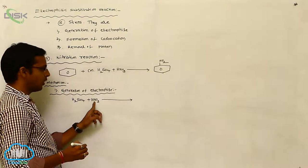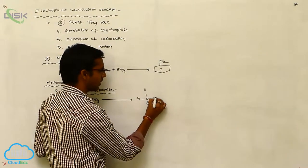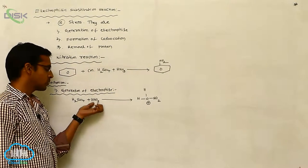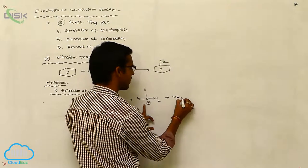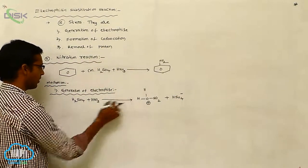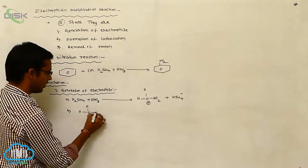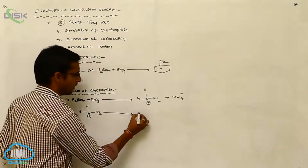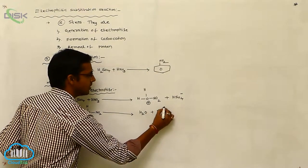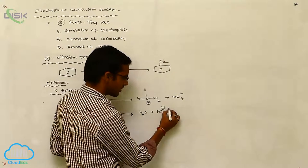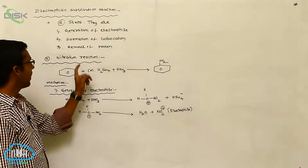Sulfuric acid donates a proton to HNO₃. The proton is abstracted, converting HNO₃ to an intermediate product, and another product HSO₄⁻ is formed. This intermediate carries a positive charge on the oxygen and undergoes decomposition, finally giving a water molecule (H₂O) plus NO₂⁺, the nitronium ion. So NO₂⁺ acts as the electrophile in the nitration reaction.